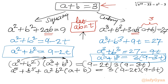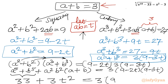Since a⁵ plus b⁵ equals 33 from Equation 2, substituting gives: 33 plus 3t squared equals 3 times (9 minus 2t)(9 minus 3t). Dividing through by 3: 11 plus t squared equals (9 minus 2t)(9 minus 3t).